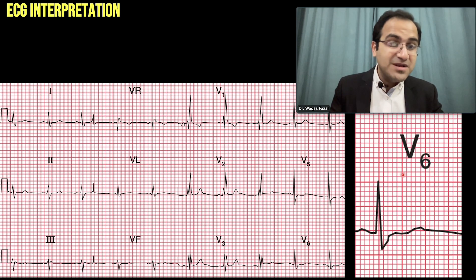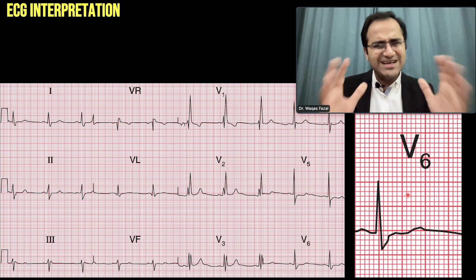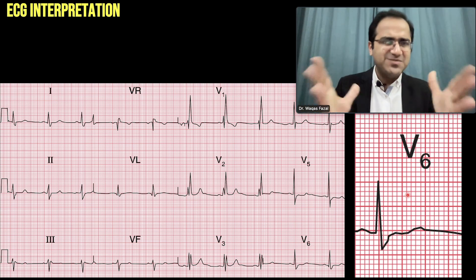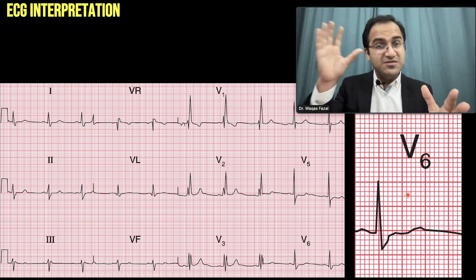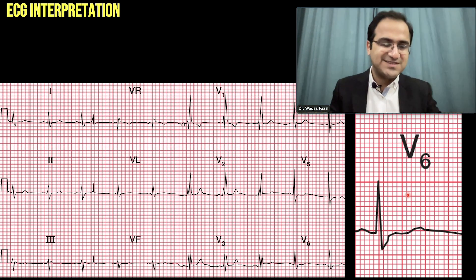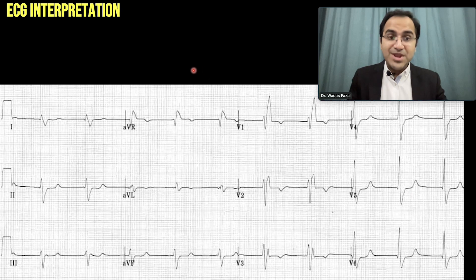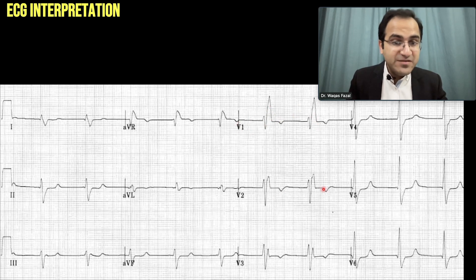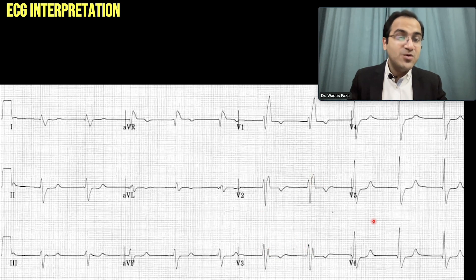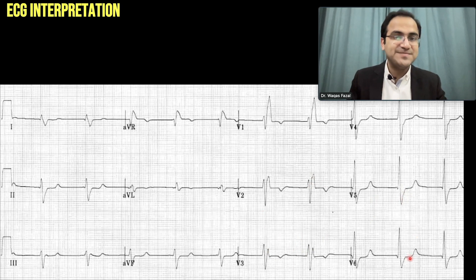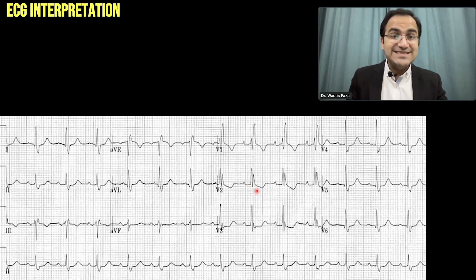This is how V6 shows slurring of the S wave — note the pattern of the S wave. This is the classical feature of right bundle branch block: M wave in V1 and V2, and slurring of the S wave in V6. Looking at another ECG, look at the M wave in V1, the M wave in V2, the M wave in V3, and the slurring of the S wave in V6.